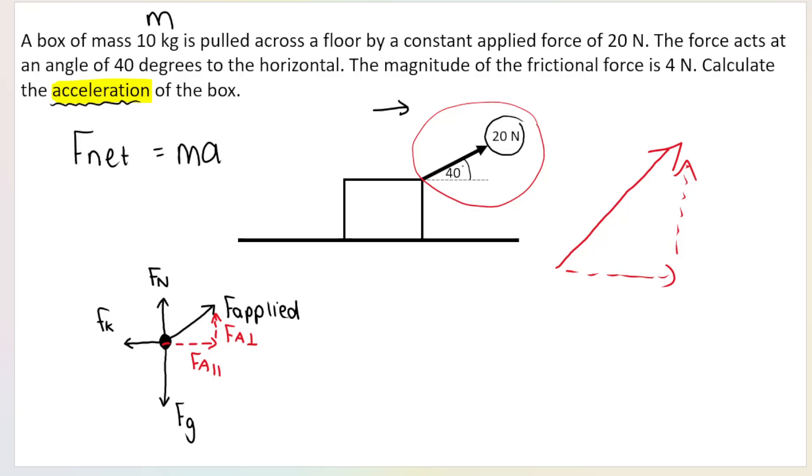So now we've got our free body diagram and the question wants acceleration. Now, you need to know, and it needs to make sense to you, that the box is going to accelerate in this direction, the parallel direction. The box does not move in the up, down, or vertical direction. So in order to calculate acceleration, I need to consider the parallel forces, or you can call it the horizontal forces, or you can call it the x forces because it's going along the x-axis. So technically, I'm looking for F net in the x direction or F net in the parallel direction.